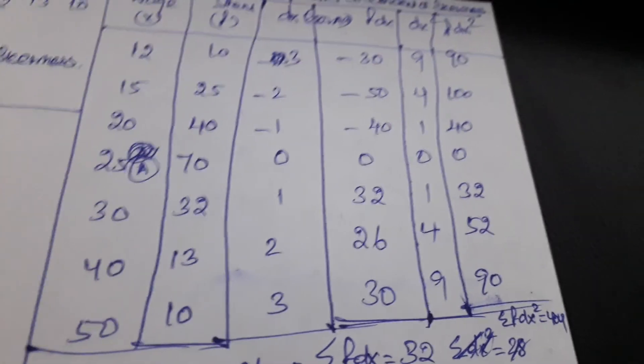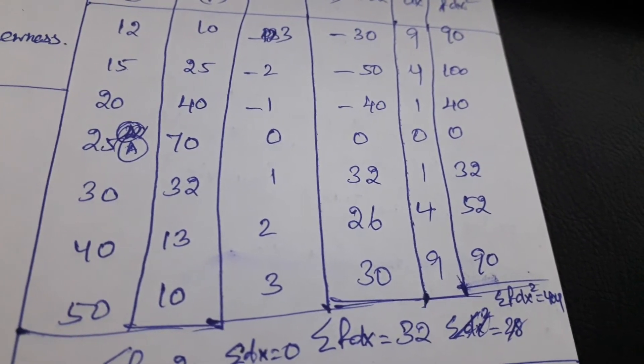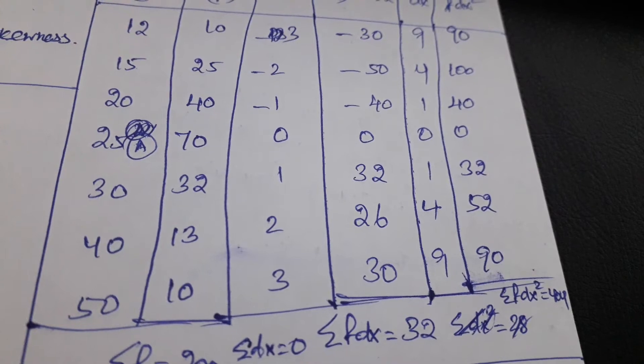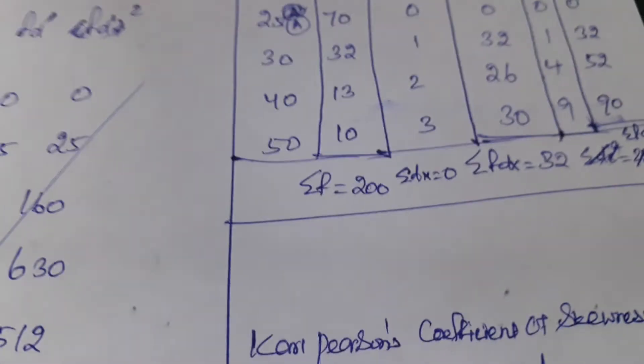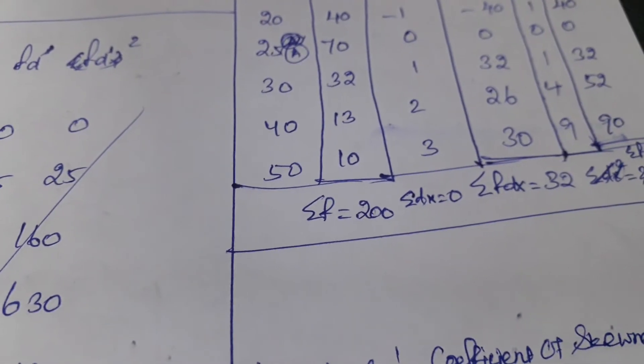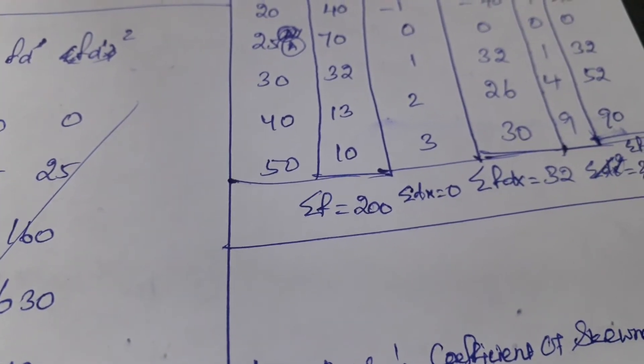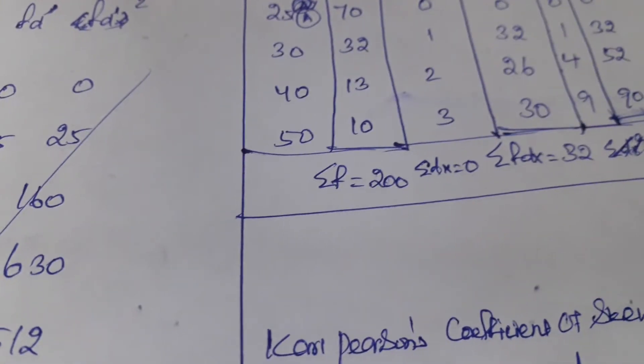By both ways we can find out the summation of f of dx squared as 404. Summation of the frequency also we have to find out - we have already found it as 200.